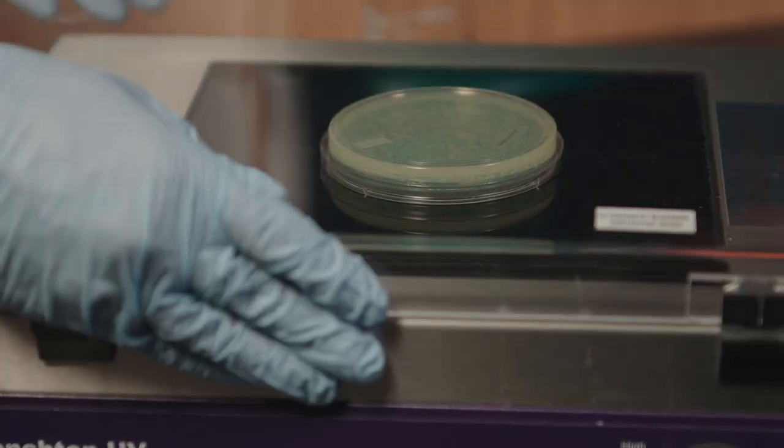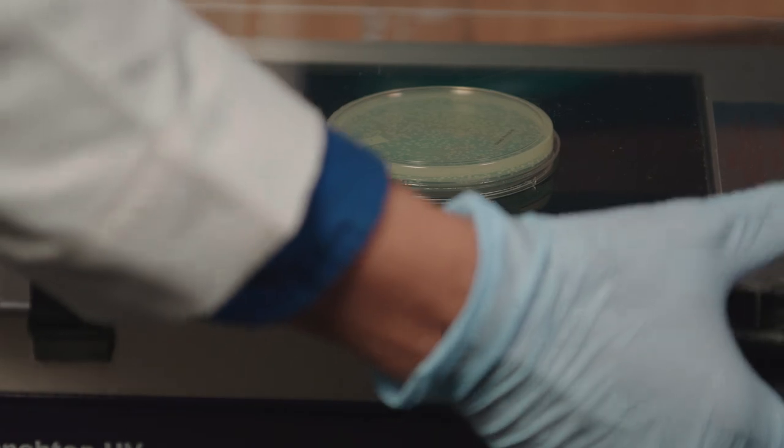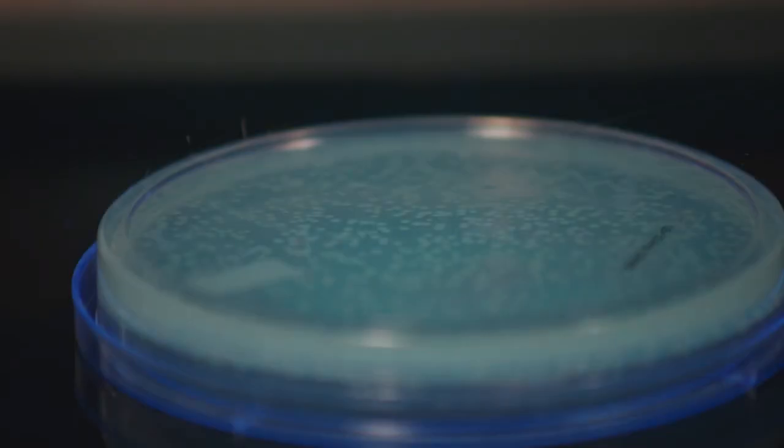Finally, retrieve the petri dish and place it onto the UV transilluminator. Turn on the UV light and observe the glowing colonies.